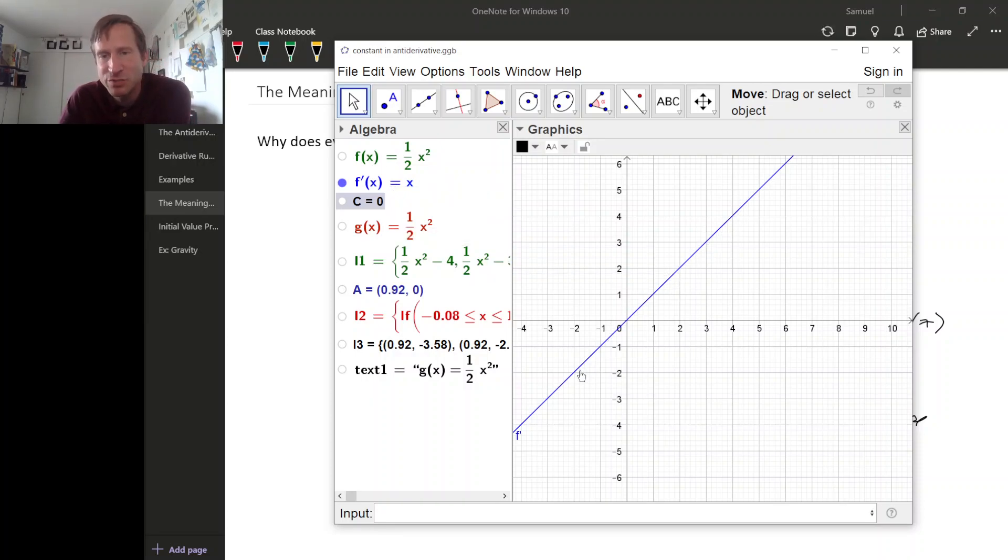So if this is the function we start with, then its antiderivative looks like this. The antiderivative of x is one half x squared, and the slope of every tangent line on this derivative graph, the green one, is given by the height of the blue graph.